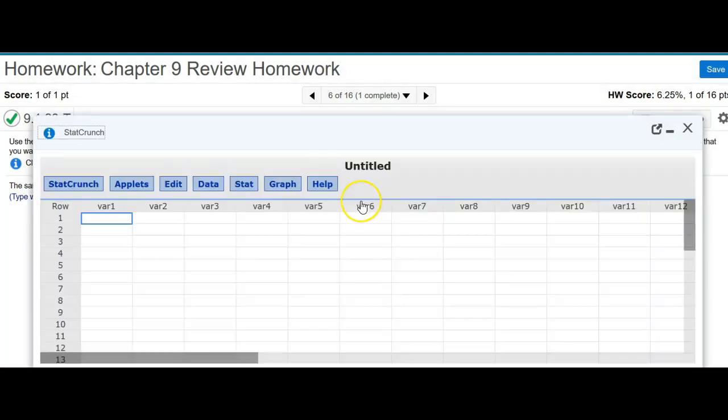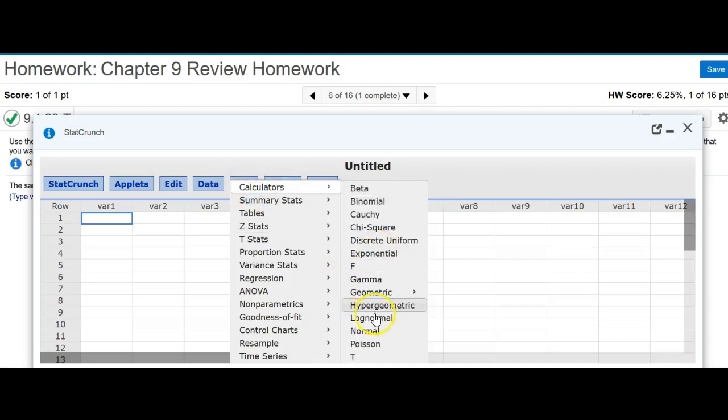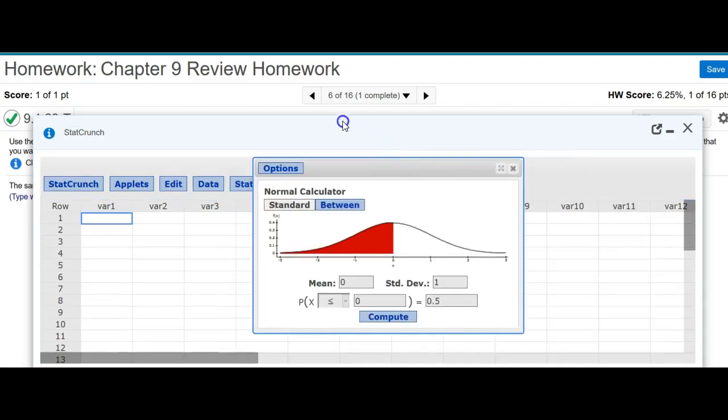And I go to calculators and I go to the normal distribution. I'm looking for the area to the left is going to be 0.995. That's going to give me this value here, 0.995 in this case.